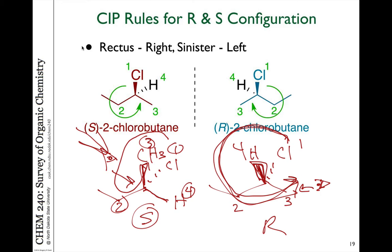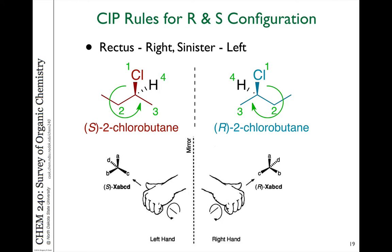There is an easier way to look at this. Regardless of how the molecule is written on paper, use your hand and point your thumb towards the direction of the lowest priority group — no matter where it's pointing. If it's pointing back, point your thumb straight back away from you; if it's in the plane of the board, point your thumb left, right, or wherever that hydrogen is pointing. The rest of the molecule is the direction your hand curves, from highest to lowest priority. On the left, the lowest priority is hydrogen, so you point your thumb away and curve your hand from chlorine to ethyl to methyl — you need your left hand to do that. So if it's your left hand, it's sinister or S. If you use your right hand, it's R for rectus or right.